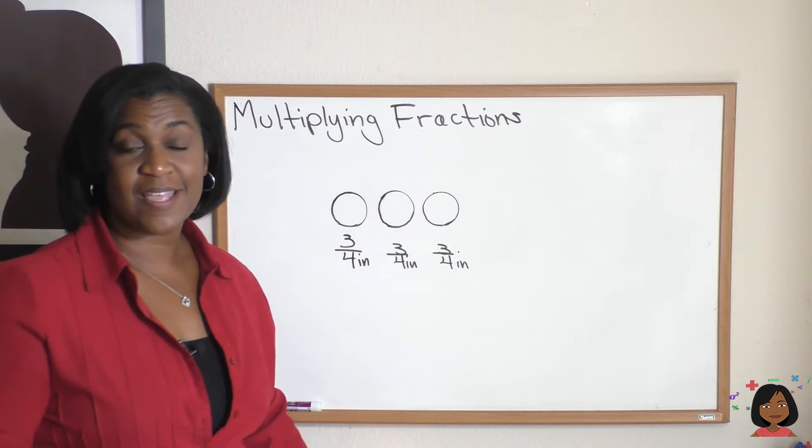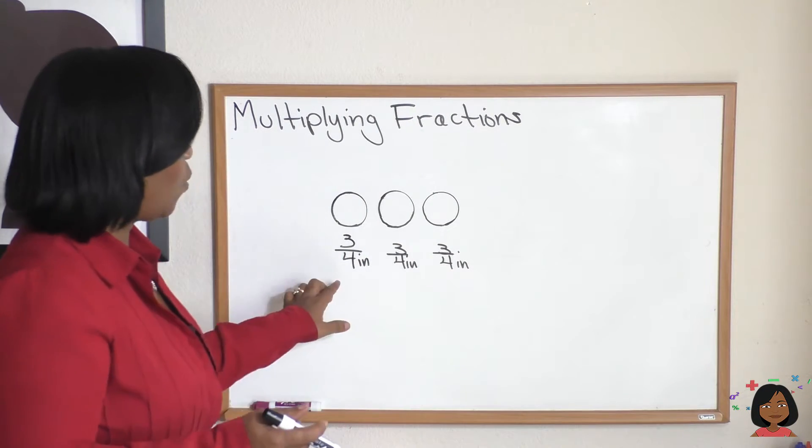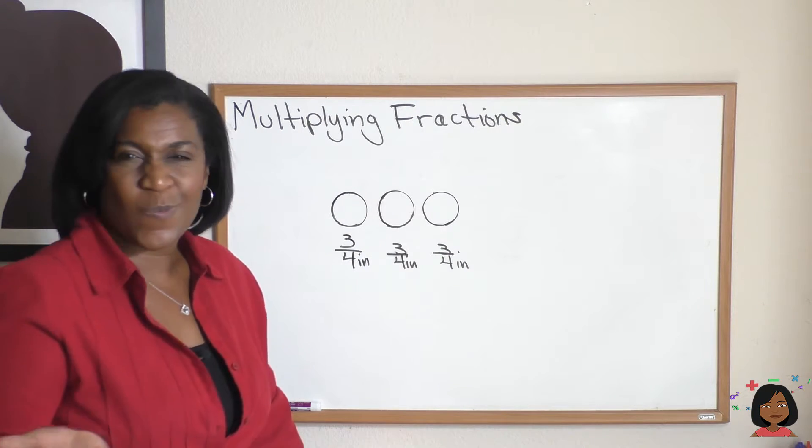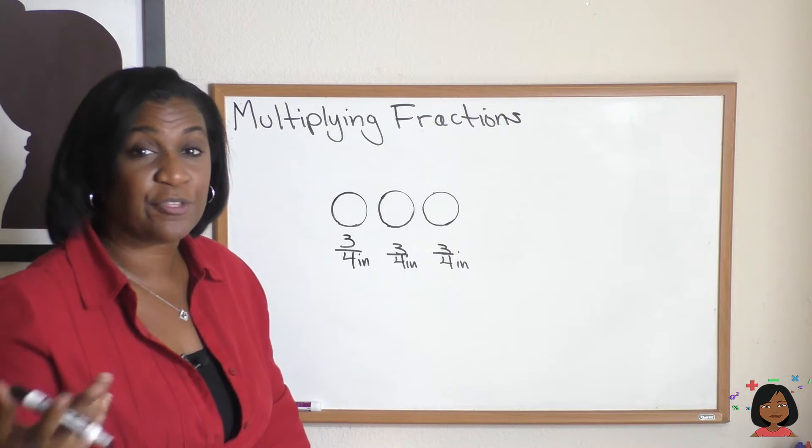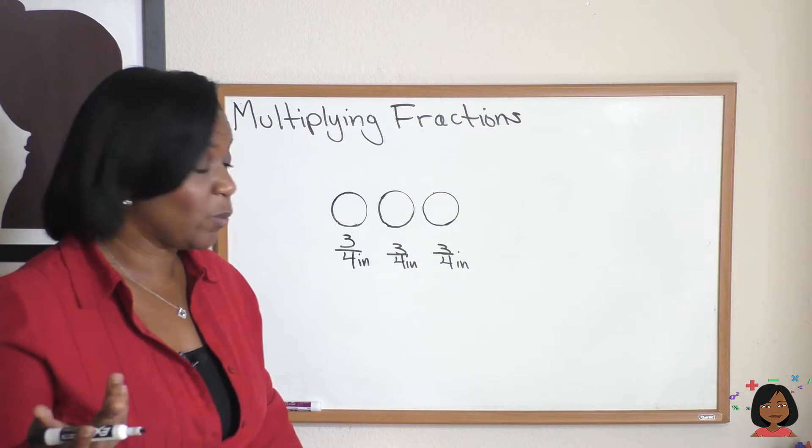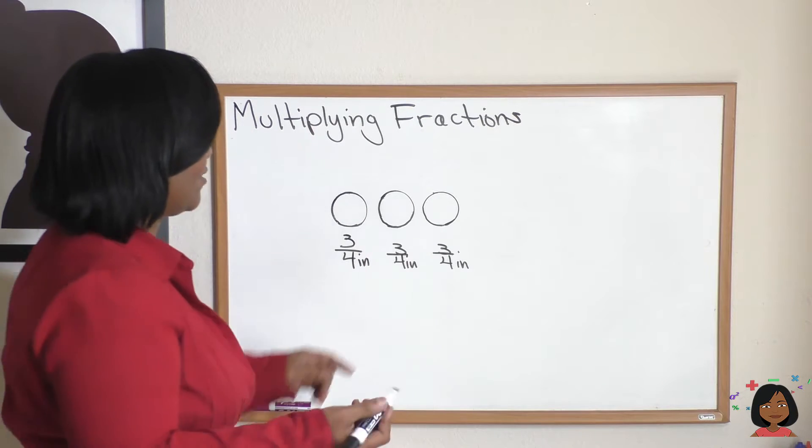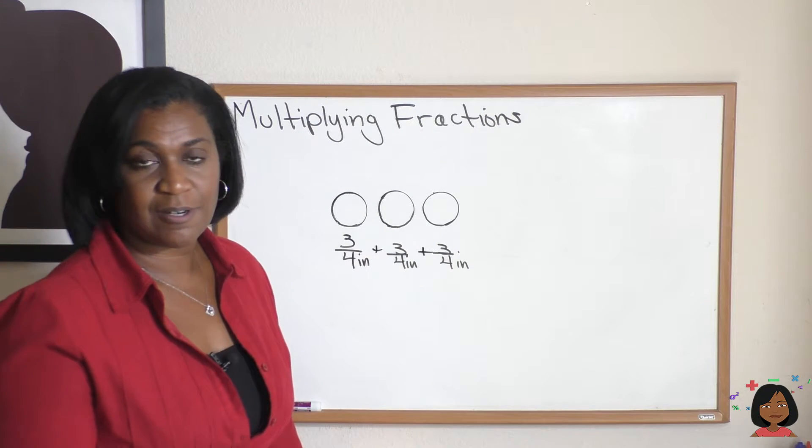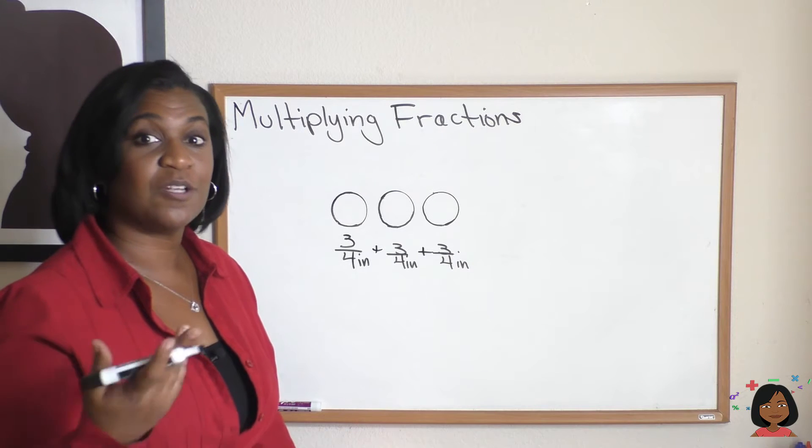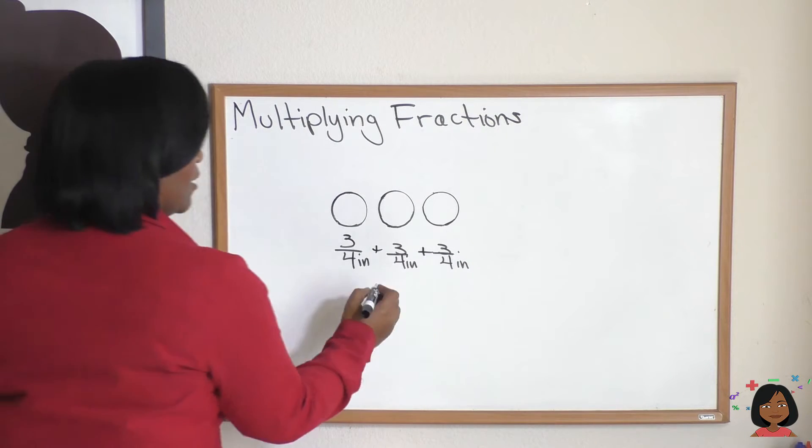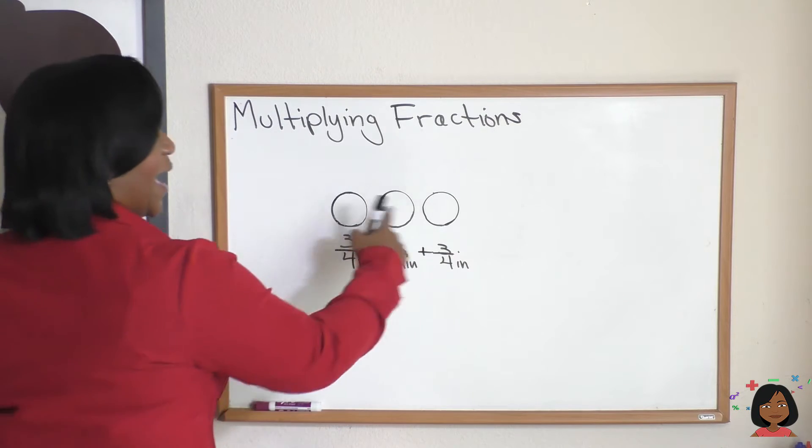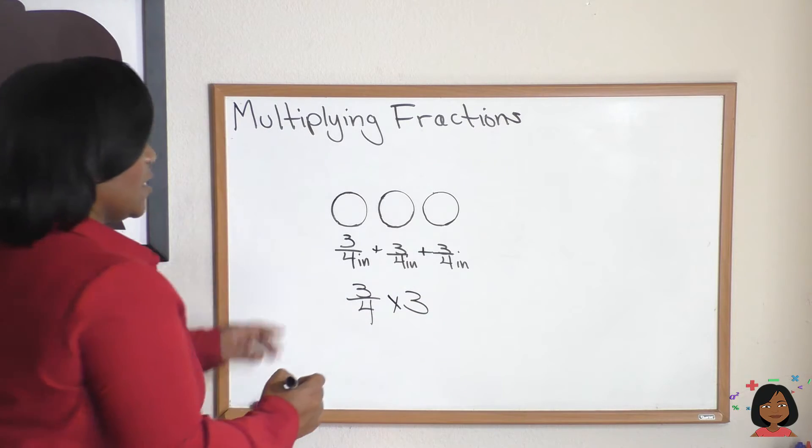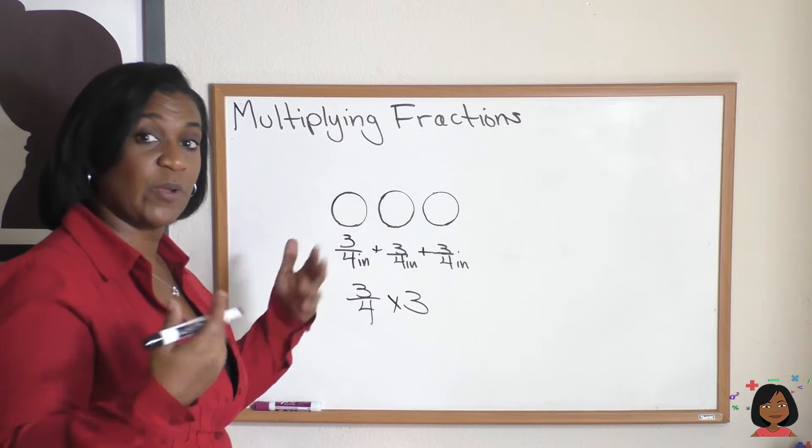Okay, let's say I had some pennies, and each penny was three fourths of an inch in diameter. So, well, what would be the total if I had three of these pennies? Well, one way to do it, we know we can add, right? We can add three fourths plus three fourths plus three fourths inch and come up with an answer. But we also could multiply. So what if we did three fourths times how many do I have? Three. Times it by three, because we know that one of them is three fourths and we have three of them. We can just go do the math now.